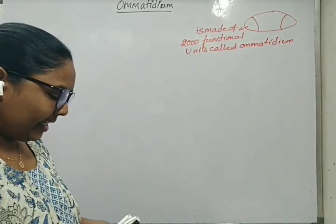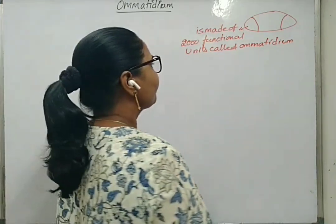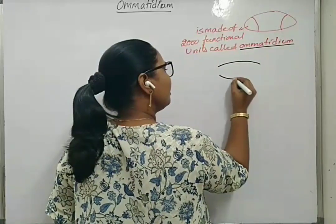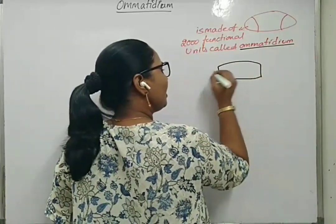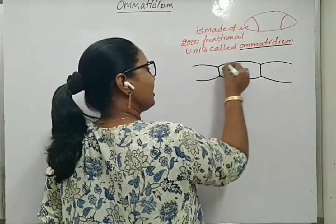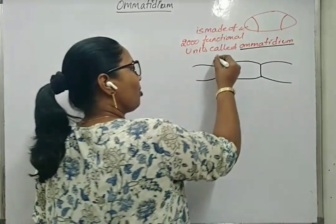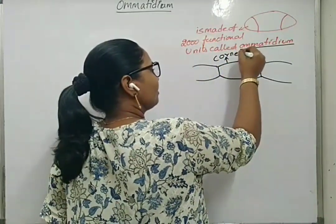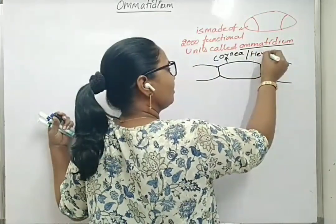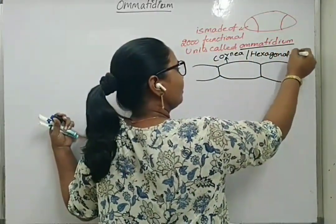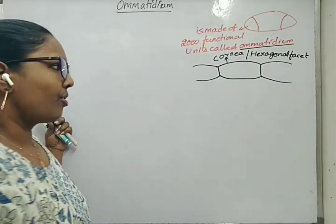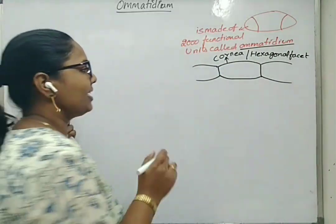We will see the detailed structure of omatidium now. Each omatidium has a hexagonal structure that we call as hexagonal facet. This hexagonal facet is also called cornea. This hexagonal facet or cornea is secreted by corneal agent cells.